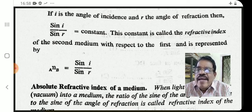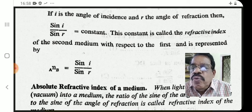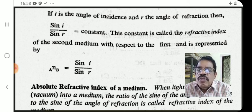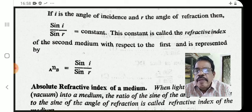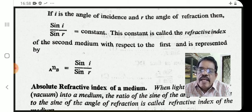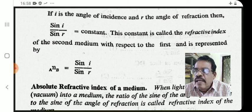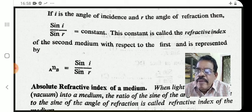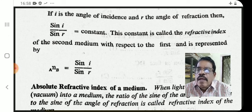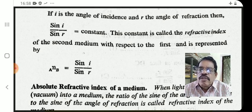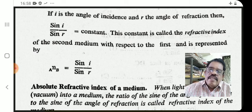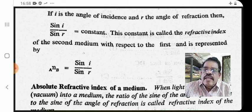Here, 'a n b' means refractive index of medium B with respect to medium A, which equals sin i / sin r. For example, the refractive index of glass with respect to water is written as 'a n b' = sin i / sin r, where I is the angle of incidence in the first medium and R is the angle of refraction in the second medium.